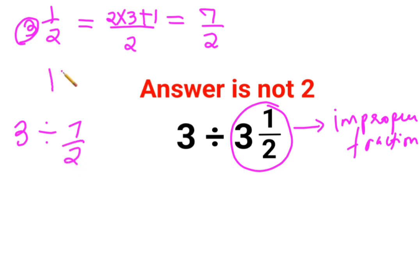Now whenever there is a fraction involved in division, we follow the rule of KCF, where K stands for keeping the first number as it is, C stands for changing the division sign into multiplication, and F stands for flipping or taking the reciprocal of 7 upon 2, which is 2 upon 7.